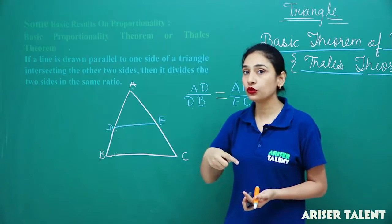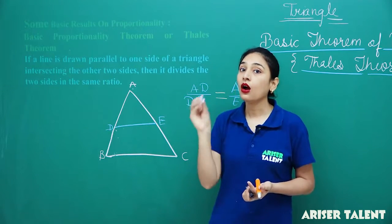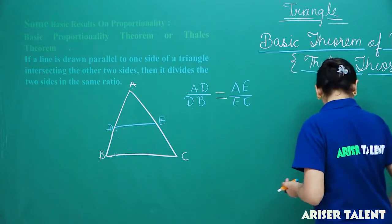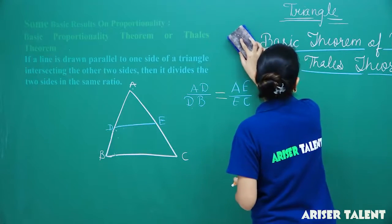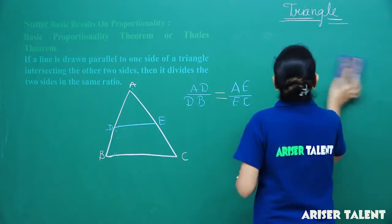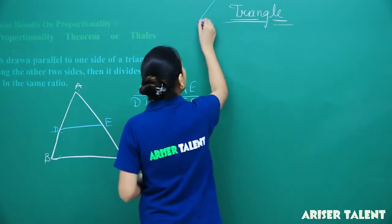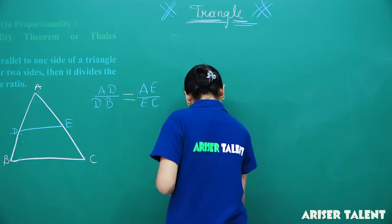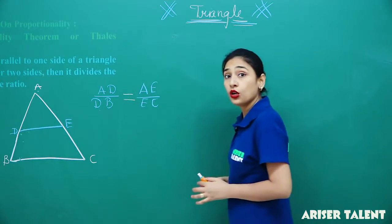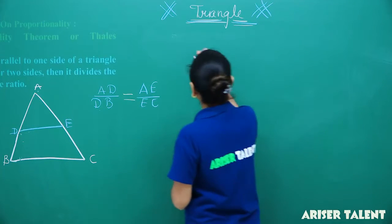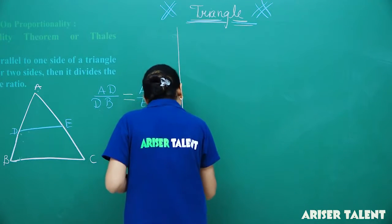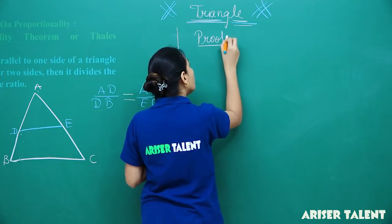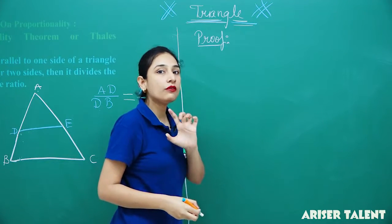This theorem we are going to use to prove many other theorems and also to solve some questions. So let us go to the proof part. First, understand what we have to prove. We have to prove AD by DB equals AE by EC.